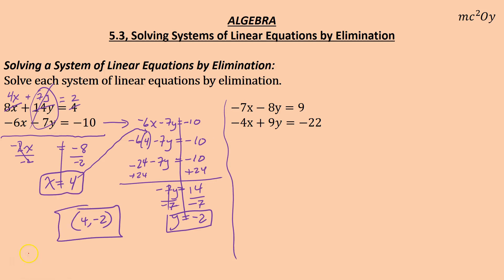If you wanted to, you could have multiplied the second equation by 2 instead — just bigger numbers to deal with. Now let's look at: negative 7x minus 8y equals 9, and negative 4x plus 9y equals negative 22. The x's don't have opposites, the y's don't have opposites, and I cannot reduce either equation. So I need to find what 7 and 4 both go into — they both go into 28. The smallest number 8 and 9 both go into is 72. Making 28 x's sounds nicer, so that's what I'll do.